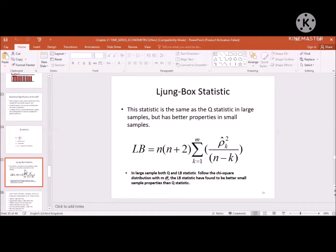There is another test, the Ljung-Box test, that is also used to examine the significance of ACF simultaneously. But the difference between the Ljung-Box statistic and the Q statistic is that if we have a small sample, then Ljung-Box has better properties compared to Q statistics. But if we have a large sample, then all tests can be used.